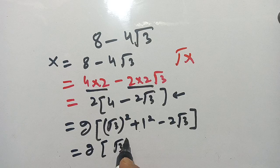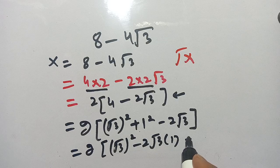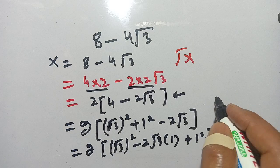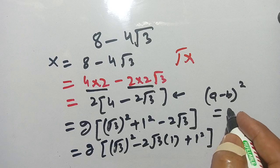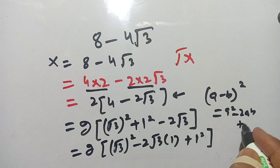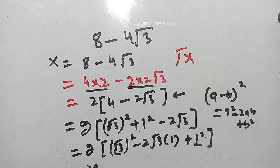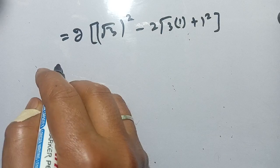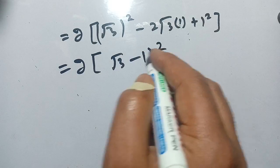Now we can write this equation as 2 times [(square root 3) squared minus 2 times square root 3 times 1 plus 1 squared]. You see that this matches the formula (a minus b) squared equals a squared minus 2ab plus b squared, where a is square root 3 and b is 1.